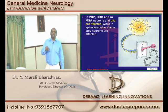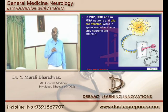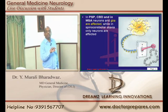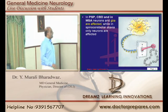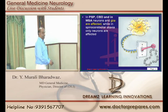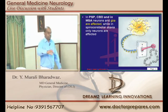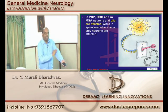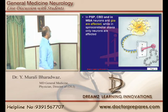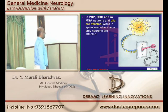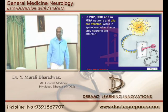In corticobasal degeneration, multisystem atrophy, and progressive supranuclear palsy, it is the glial cells that are affected in the brain. Only in spinocerebellar ataxia is it the neurons — specifically the axons of the neurons — that are basically affected.